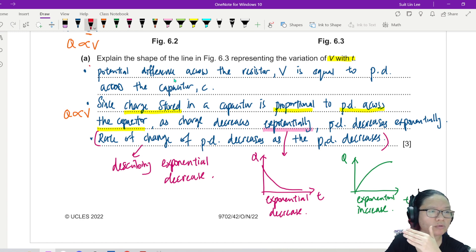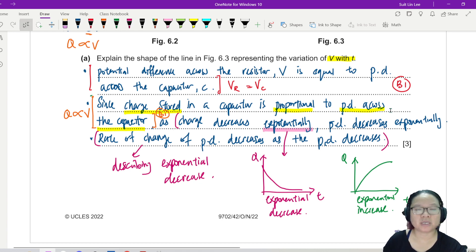So three points here would be: one, you say that the potential difference across the resistor is equal to the potential difference across the capacitor - it's the easiest one and the most logical one. The second one, you mention that the charge stored is proportional to the potential difference. And finally, you talk about the exponential decrease. So as charge decreased, PD decreased exponentially. And then the rate of change of potential difference would decrease as the potential difference decreases. If you don't want to write the top line, it's fine. If you don't want to use the word exponential, this is a bit like, tell me you are talking about exponential decrease without telling me you are talking about exponential decrease.